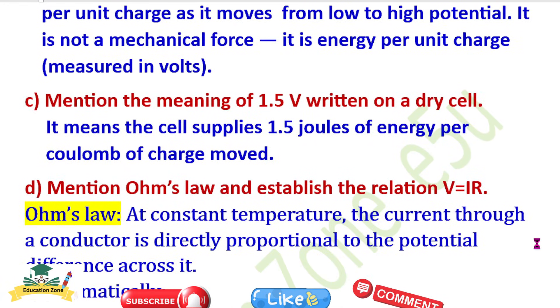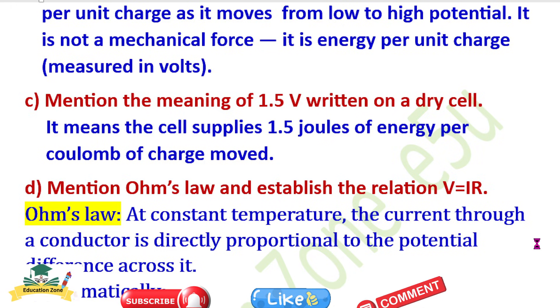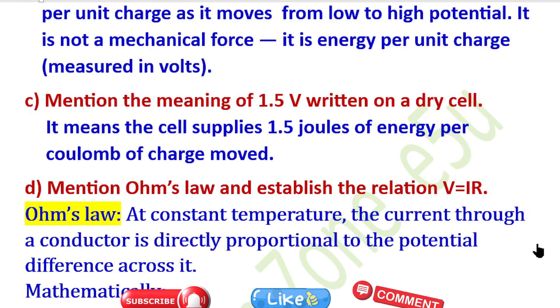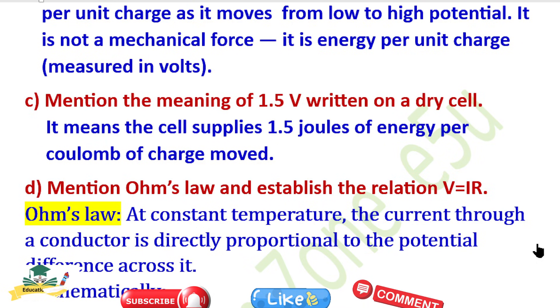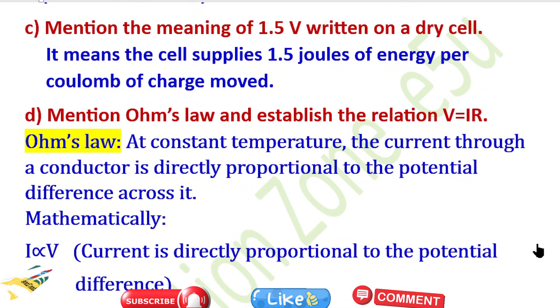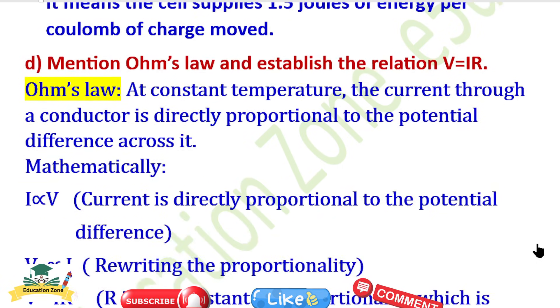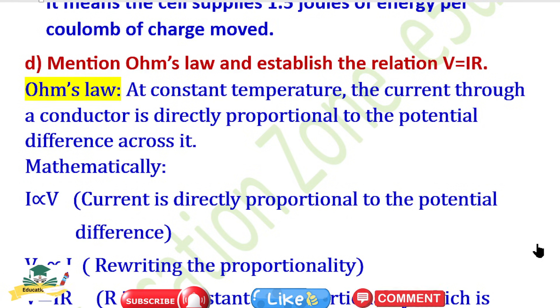Question C: Mention the meaning of 1.5 volt written on a dry cell. It means the cell supplies 1.5 joules of energy per coulomb of charge moved.